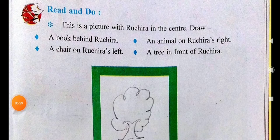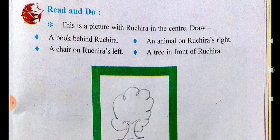Read and do: this is a picture with Ruchira in the center. Draw a book behind Ruchira, an animal on Ruchira's right, a chair on Ruchira's left, and a tree in front of Ruchira.